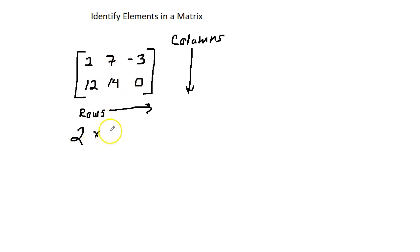So this is known as a 2 by 3 matrix. You cannot mix up the numbers. A 2 by 3 matrix is not the same as a 3 by 2 matrix because a 3 by 2 matrix would have 3 rows and 2 columns.